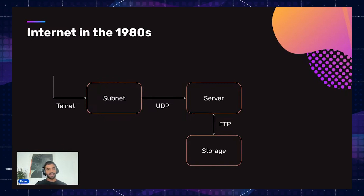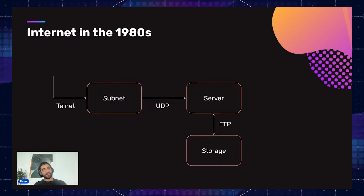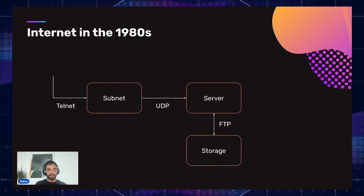Let's take a step back and time travel to the 1980s to see what the early stages of the internet looked like. Back in the old days of the internet, you had to do a lot of manual work and really interact directly with infrastructure. You had to know basically the subnet of some network you wanted to connect to, use Telnet to connect to a server, then FTP some storage off of it. It was a very manual process that exposed a lot of these layers to the end user.